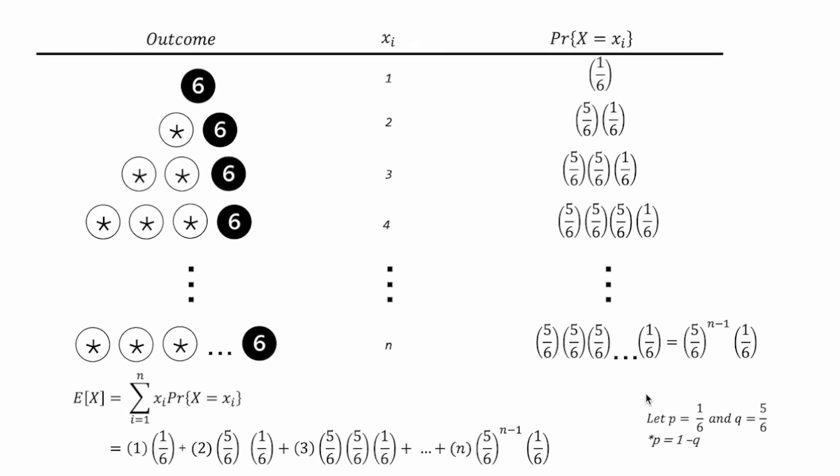Great. At this point, to make it more simple, to make the numbers less hairy to deal with, let P, the probability of success, so getting 6 on the dice roll, be 1 over 6, and Q, be equals to 5 over 6. And due to laws of total probability, because there's only two outcomes here, P is just 1 minus Q, as we can see.